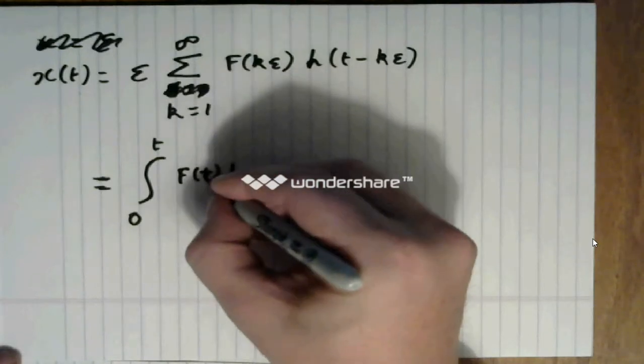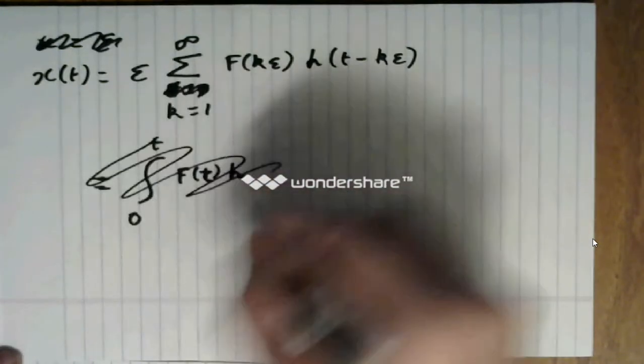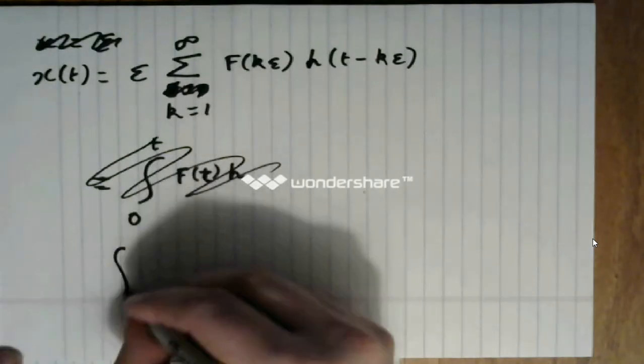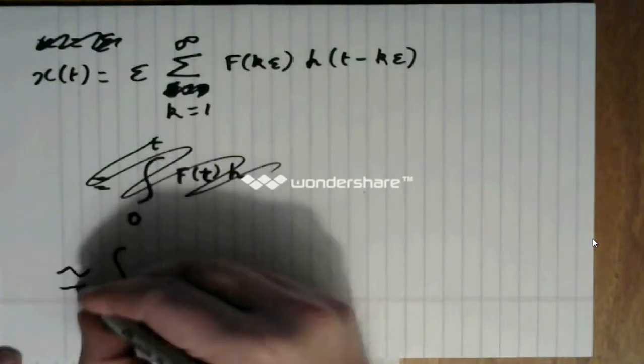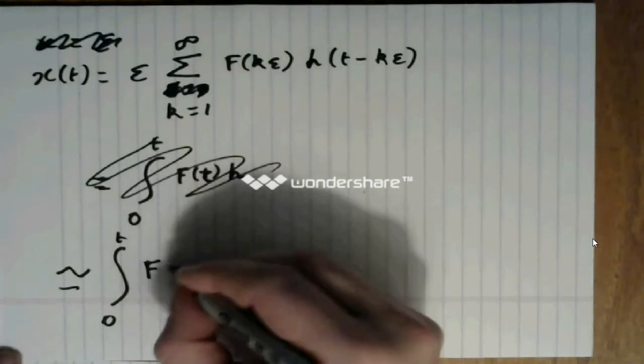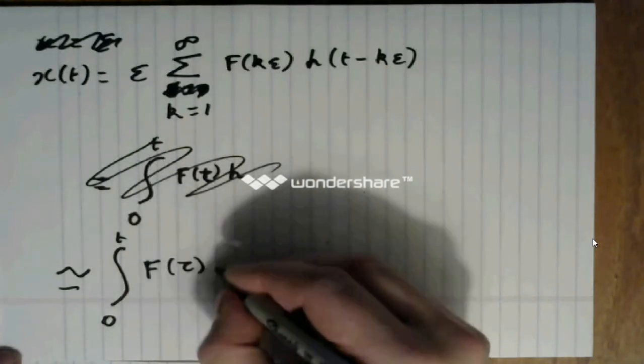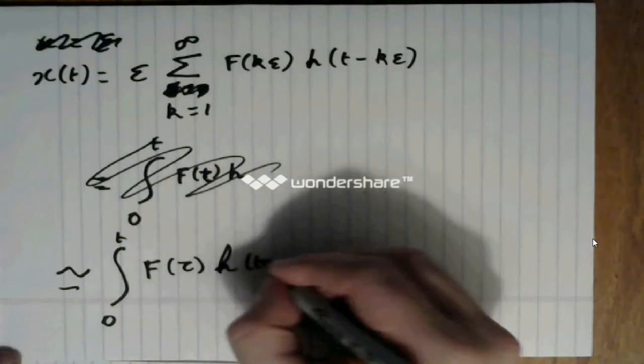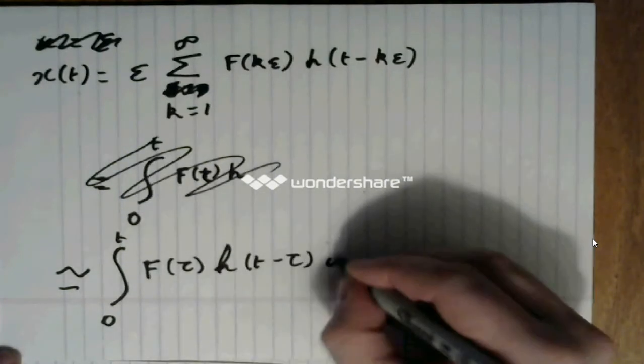Let me rewrite this. So, it can be approximate by the integral from zero to t of f of tau, h of t minus tau, d tau.